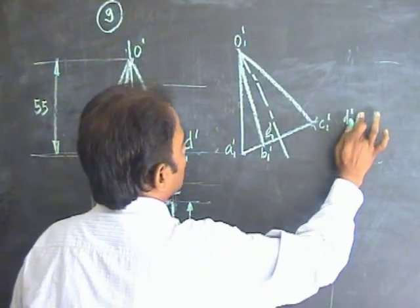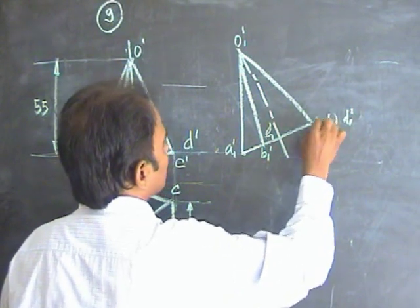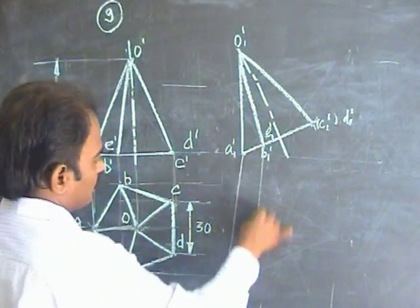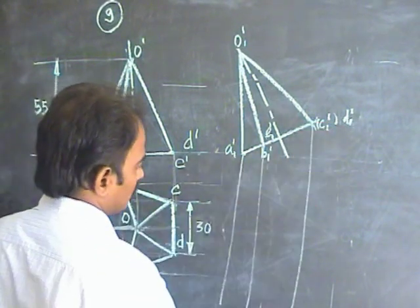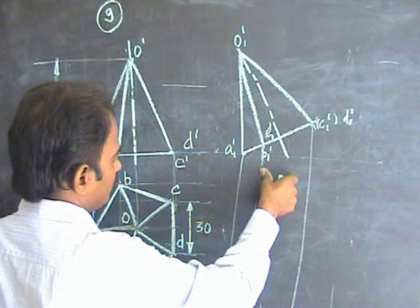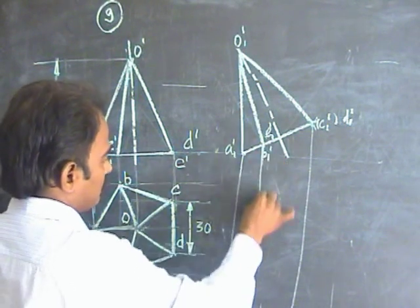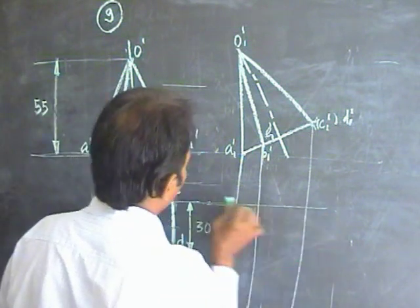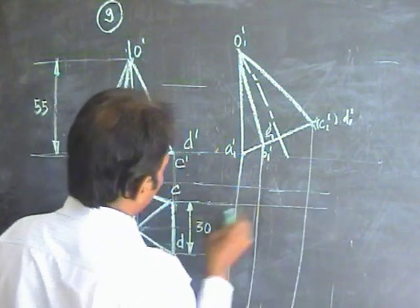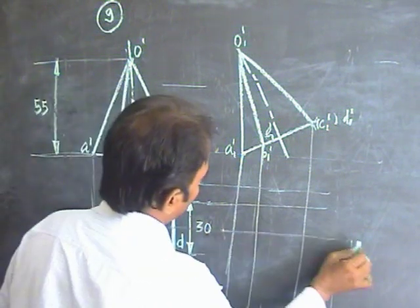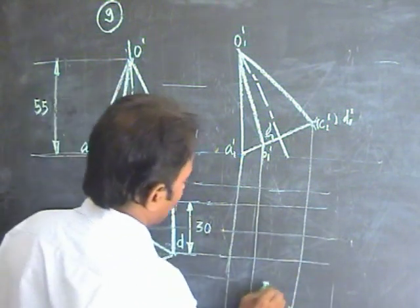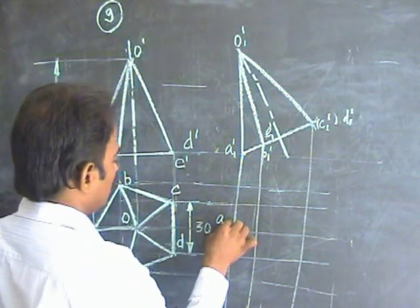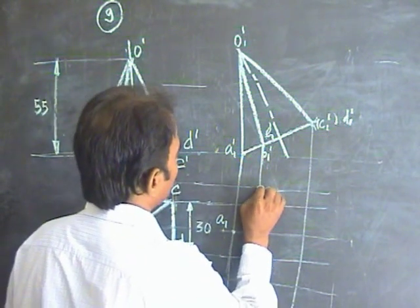D1 dash is visible. Try to draw the other views. Draw these vertical lines. Here, you can draw the horizontal lines. A horizontal and A vertical gets you the final A1. D horizontal and D vertical gets you B1.